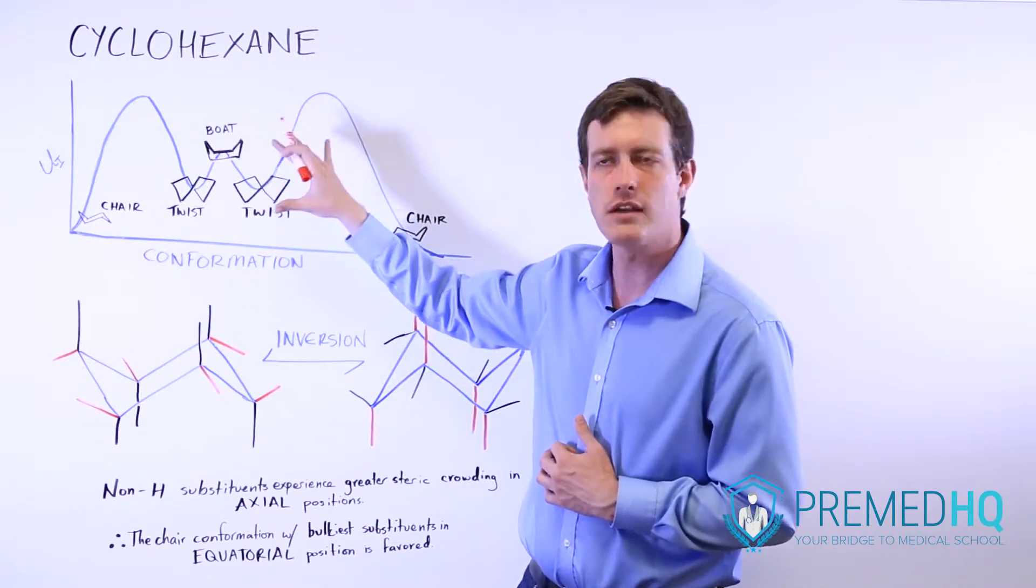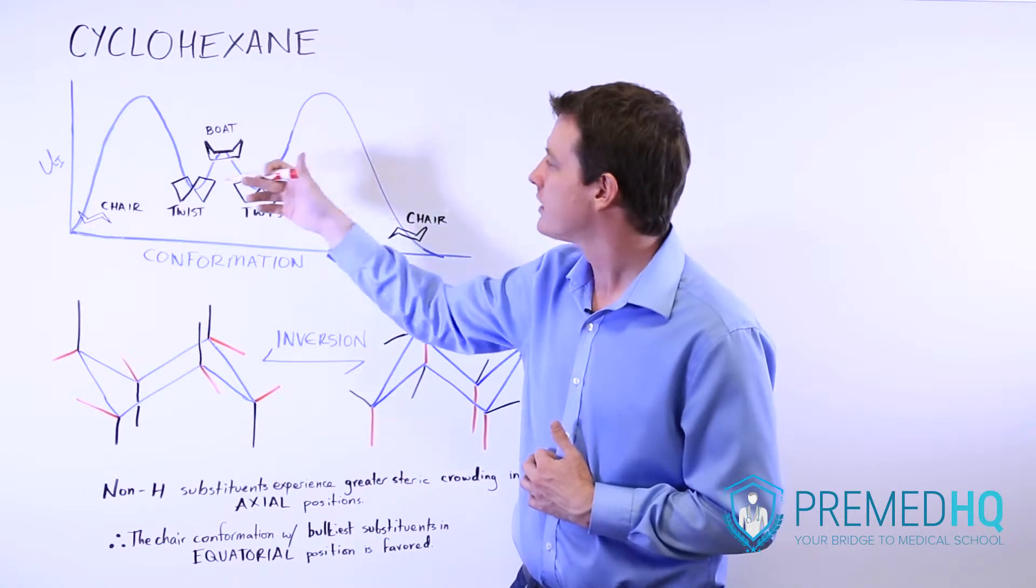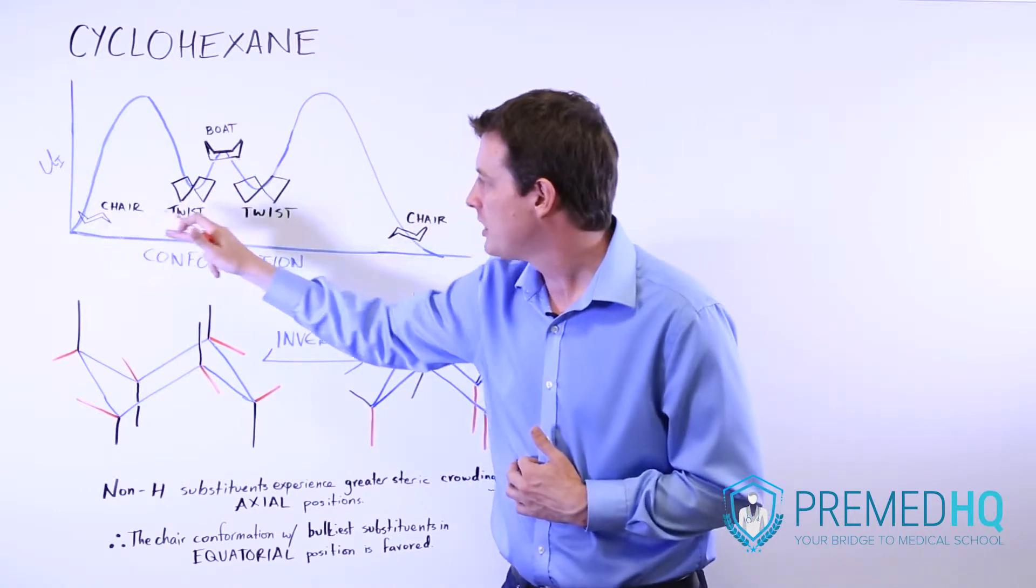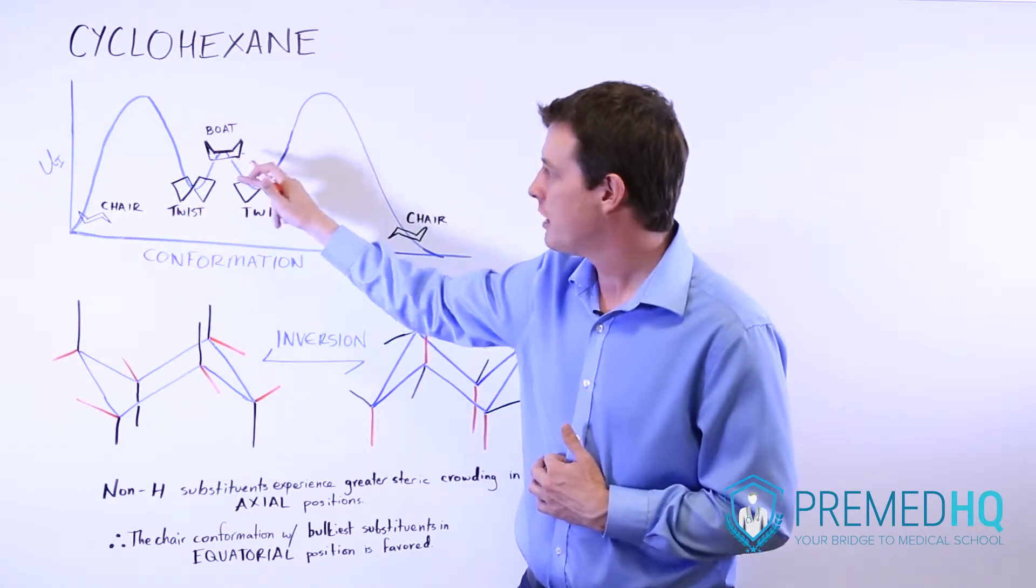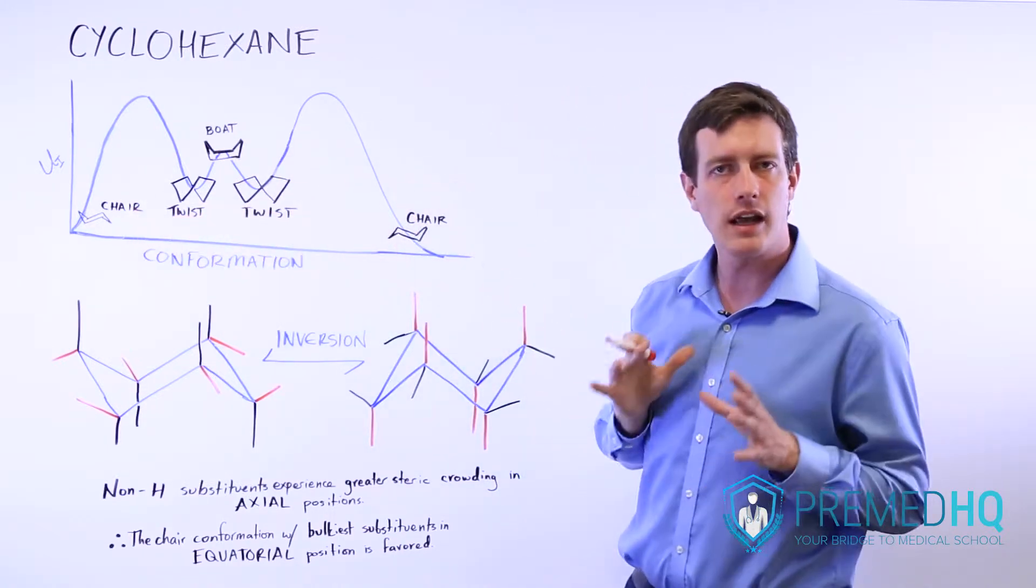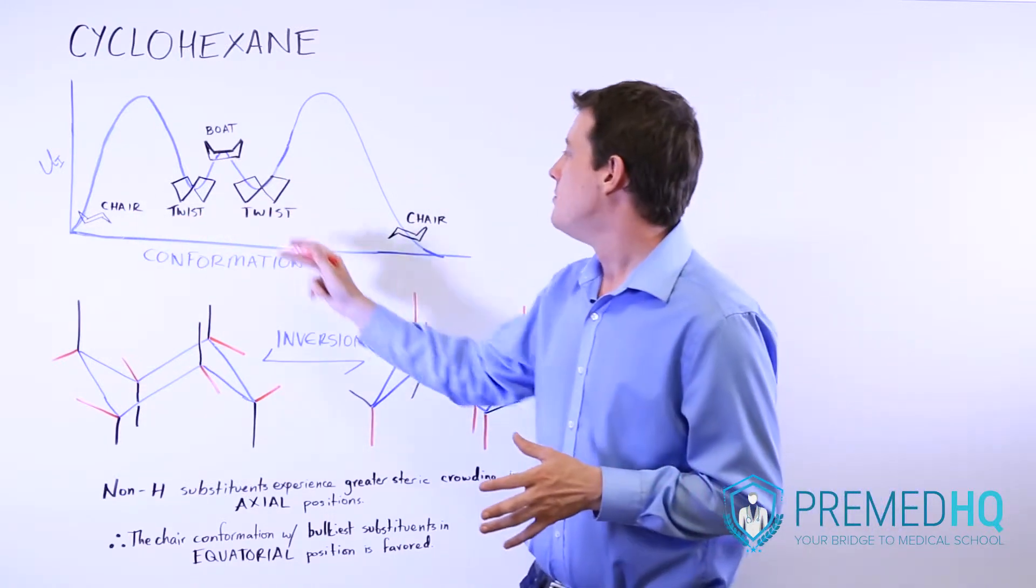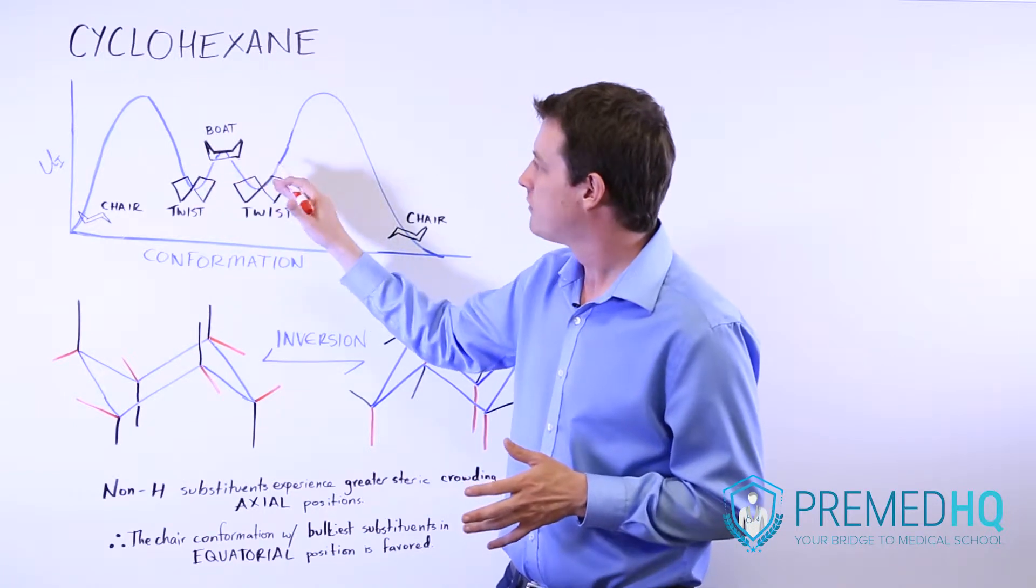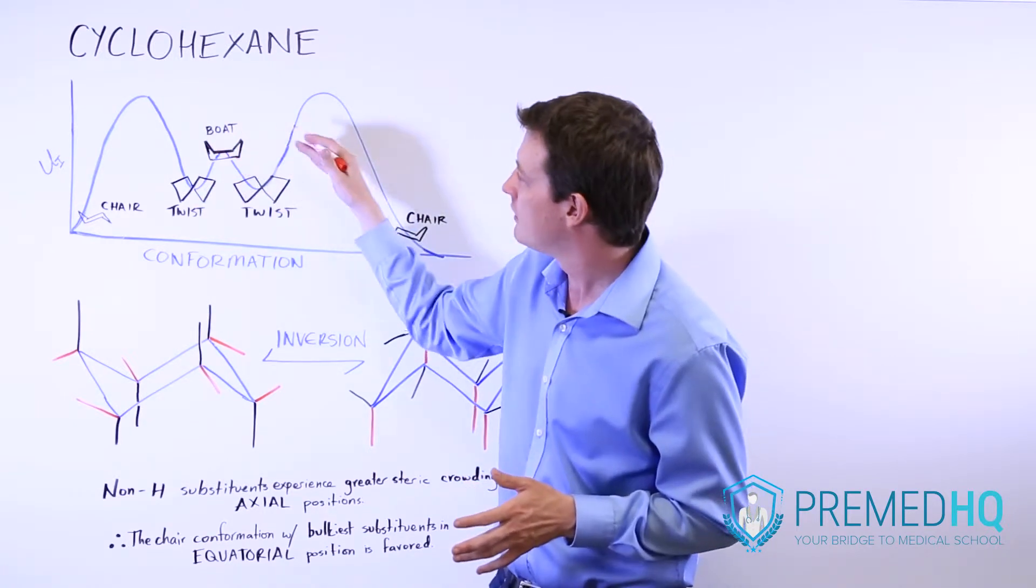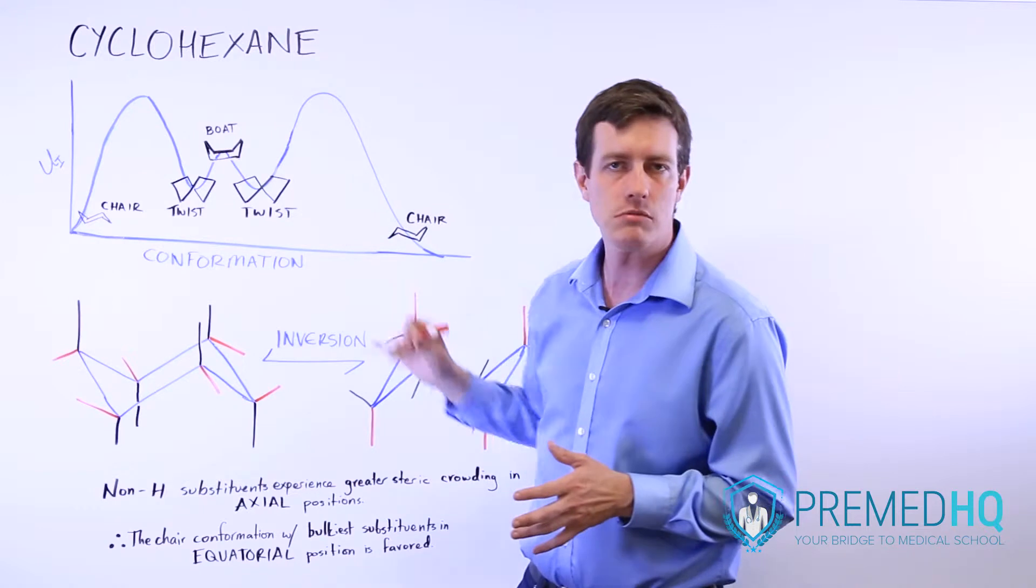So these are the three ways that you'll see cyclohexane described: chair conformation, twist conformation, and boat. Chair is the lowest energy and generally the most stable. But twist is a fairly low energy form and boat is something that can exist as sort of an intermediate.